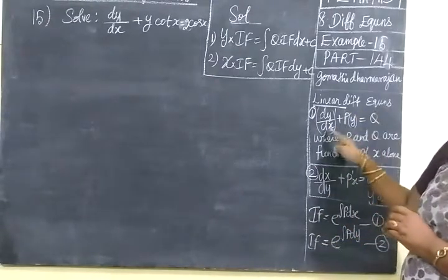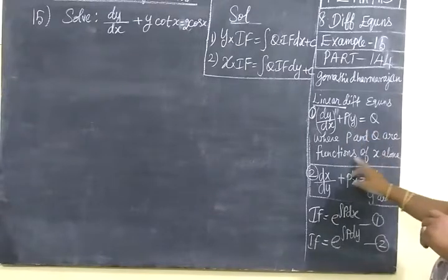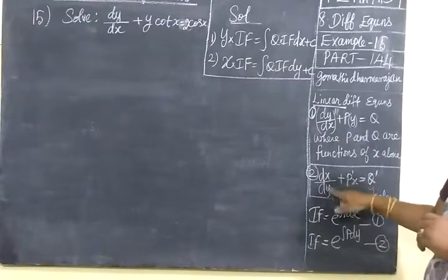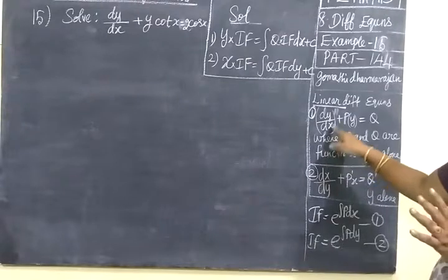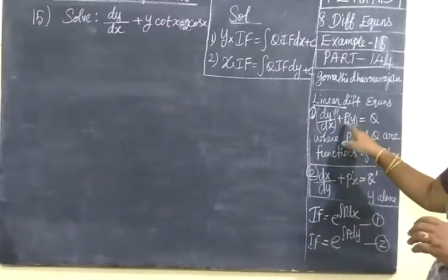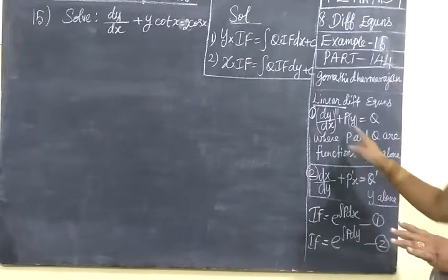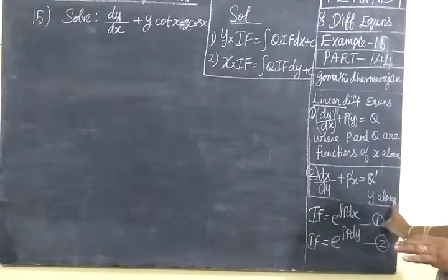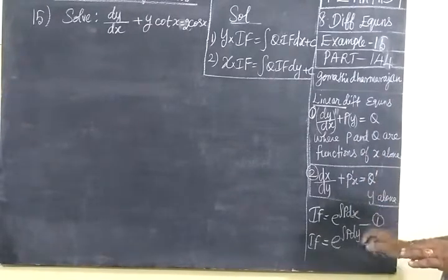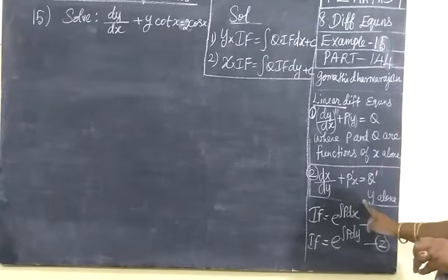The linear differential equation forms are: dy/dx + Py = Q, where P and Q are functions of x. The second form is dx/dy + P'x = Q'. This is a linear differential equation, linear in the power one, first order. Here P and Q are functions of x for the first form. The first uses dy/dx with respect to x, and the second uses dx/dy with respect to y.